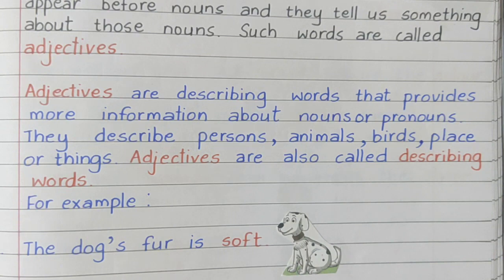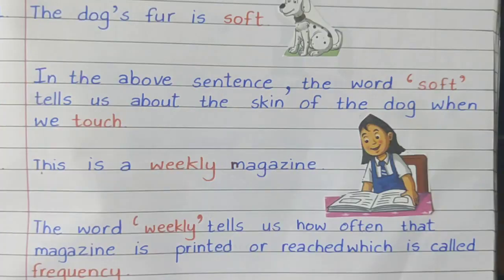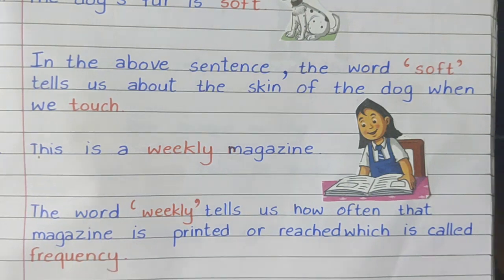For example, 'The dog's fur is soft.' The word soft tells us about the texture of the dog's skin when we touch it. 'This is a weekly magazine.' The word weekly tells us how often that magazine is printed or received, which is called frequency.